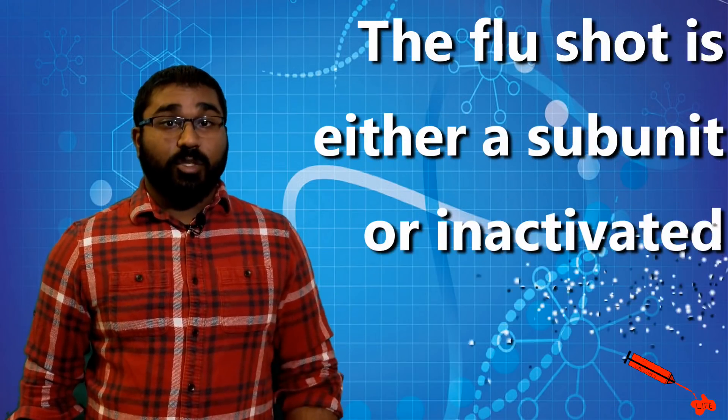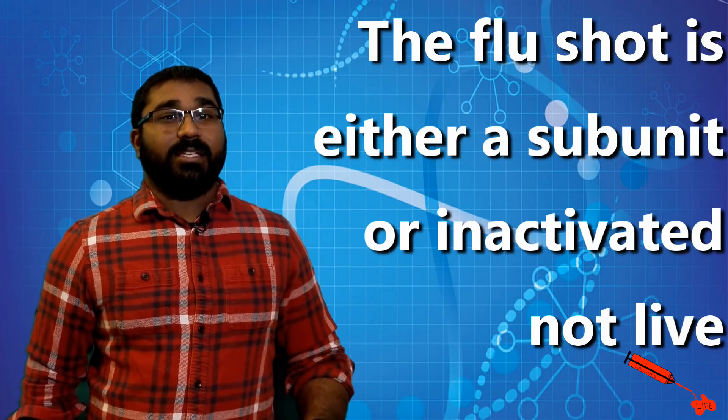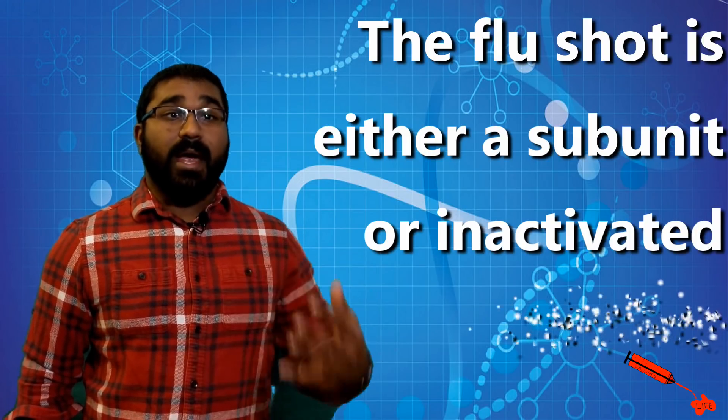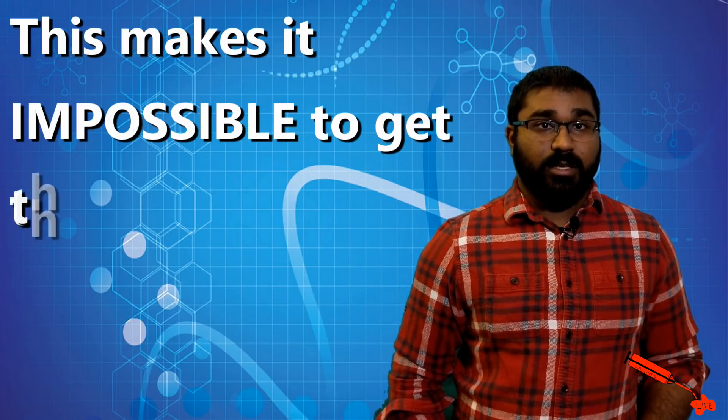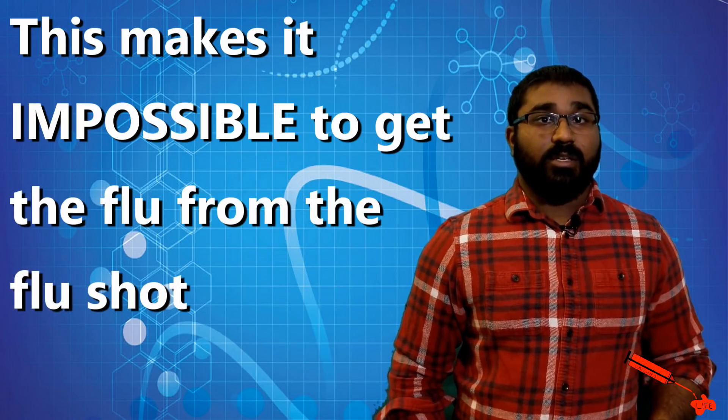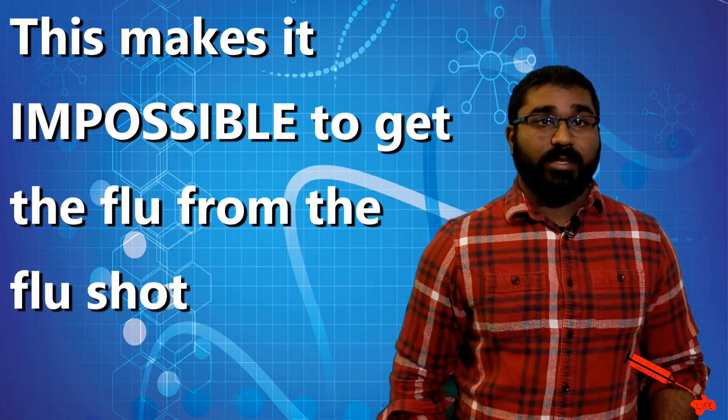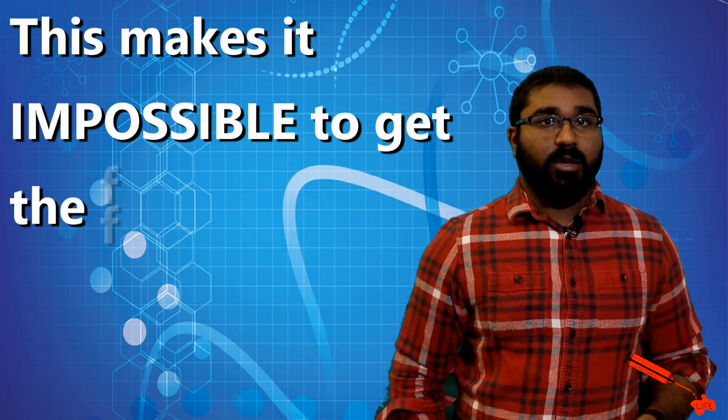So to summarize, the syringe form of the vaccine is either a subunit or an inactivated form of the virus. Now, those of you who have already seen my miniseries on the different classes of vaccines will know that for inactivated and subunit vaccines, it is impossible to get an infection. An inactivated vaccine uses a killed version of the virus, and a subunit vaccine only uses bits and pieces of the virus, specifically the antigenic portions.